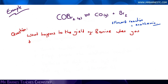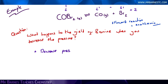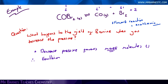For the same reaction but decreasing the pressure: as you know, increasing the pressure favours the side with the least molecules, so decreasing the pressure is the opposite — it will favour the side with more molecules. In this case I have more molecules on the right: CO and Br2, so two molecules compared to my one. Therefore the equilibrium will shift to the right, and my yield of bromine will increase.